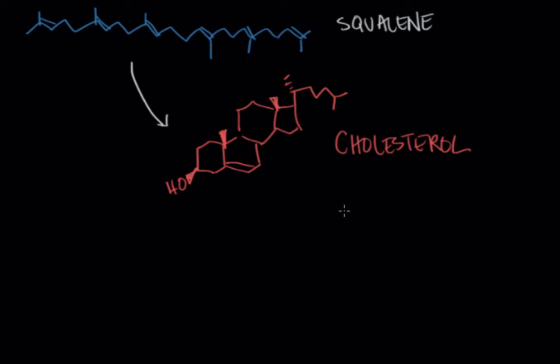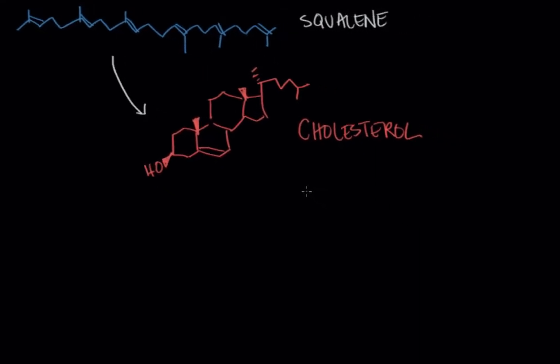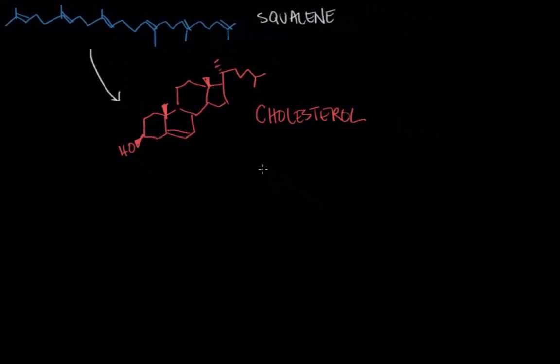In the case of endocrine organs that use steroid hormones to communicate, cholesterol can actually be altered to form the very characteristic steroid backbone. These are the four characteristic rings of the steroid backbone.